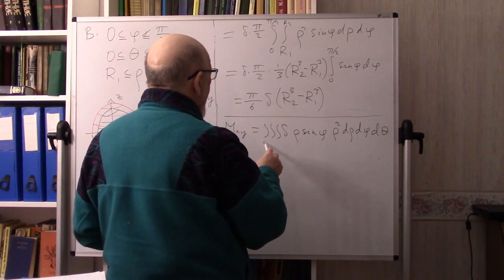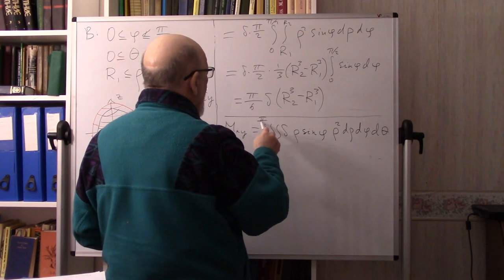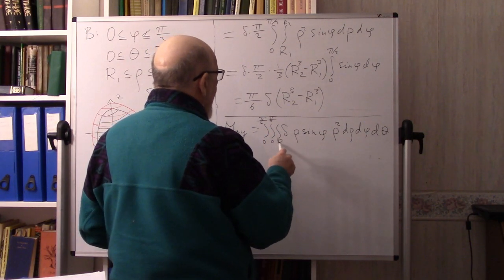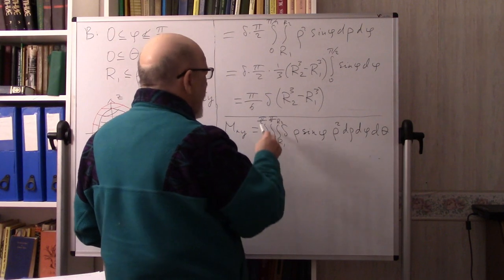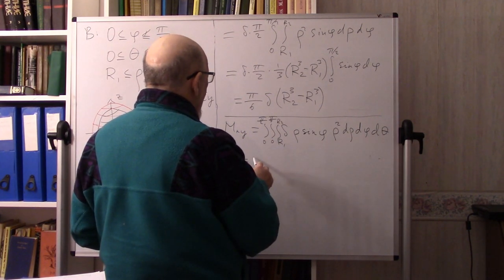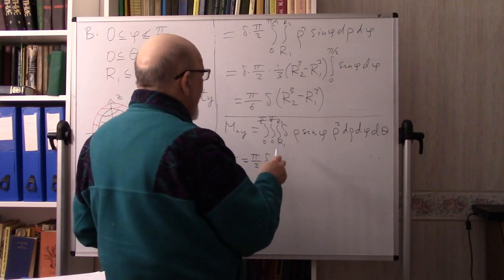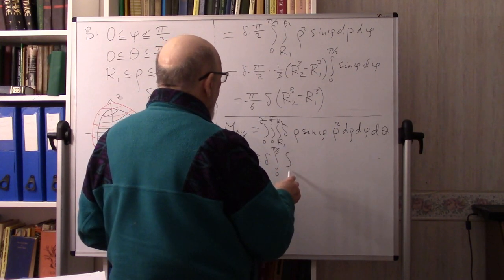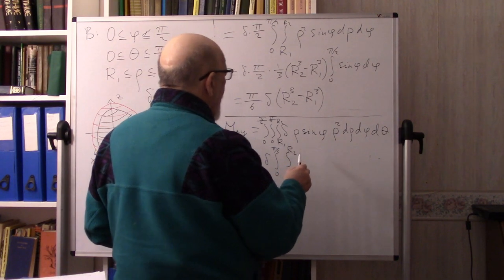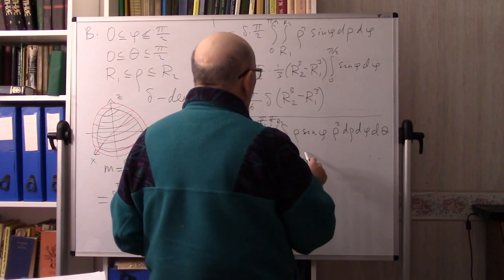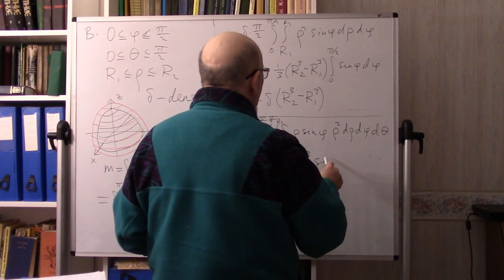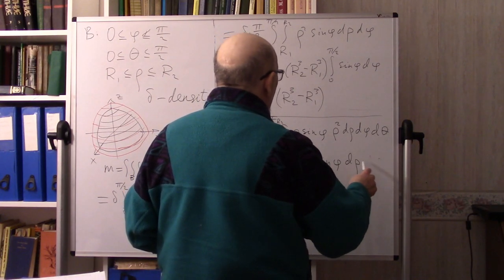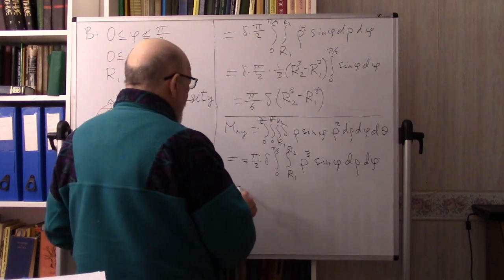The outer integral over θ gives π/2. Then we have (π/2)δ times the integral from 0 to π/2 of cos φ sin φ dφ, times the integral from R₁ to R₂ of ρ³ dρ. Integrating ρ³ gives (1/4)(R₂⁴ − R₁⁴).